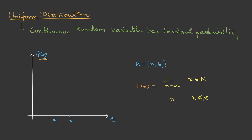What this means is that from a to b, the function is a constant value, where this value is 1 divided by (b minus a). Other than the random variable range, the value is 0 everywhere else, so it touches the x-axis.